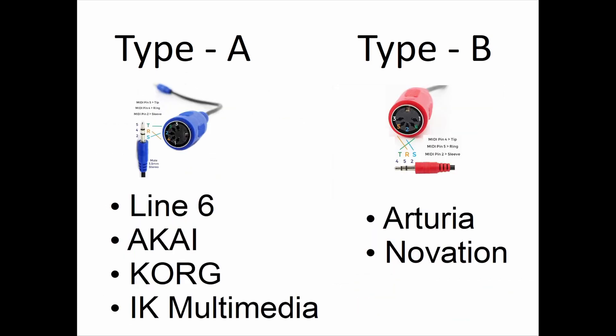How do you tell which one you need? Common usage among Korg, Akai, IK Multimedia, and Line 6 is Type A, while Arturia and Novation typically seem to be using Type B.